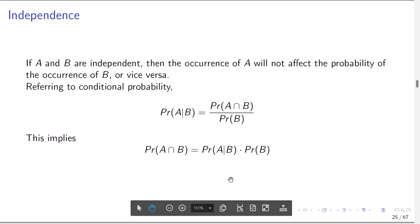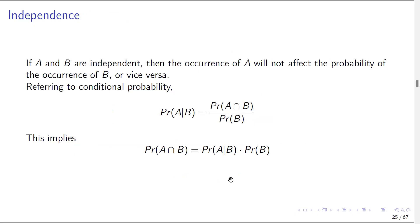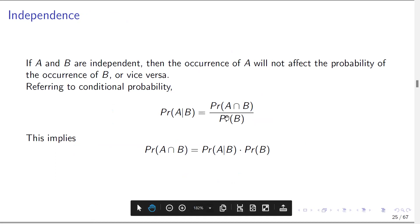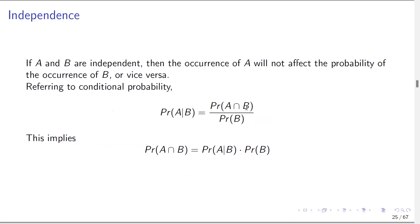Now let's look at the concept of independence. If A and B are independent, then the occurrence of A will not affect the probability of the occurrence of B, or vice versa. Referring back to conditional probability, P(A|B) = P(A∩B)/P(B). This implies, by cross-multiplication, that P(A∩B) = P(A|B) · P(B).